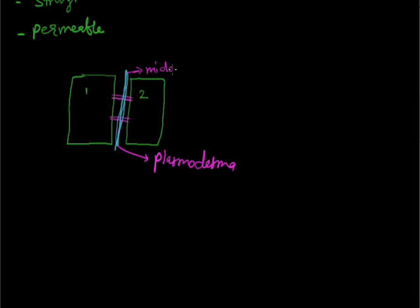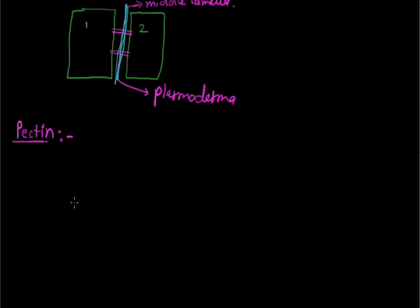The middle lamella is responsible for binding both cell walls together. It is made up of calcium and magnesium pectate. The role of pectin in the cell wall is that pectin is the substance responsible for the joining of two cell walls, just like a plant cell cement.